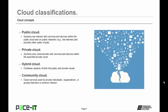There are four basic cloud classifications. There is the public cloud, where systems can interact with services and devices within the public cloud and on public networks such as the internet — Amazon's AWS is an example. Then there are private clouds, where systems only communicate with services and devices within the specified private cloud, and which are not open for the general public to purchase services. Then there are hybrid clouds, which combine aspects of both the public and private clouds. Finally, there is the community cloud classification, where cloud services are used by private individuals, organizations, or groups that have a common interest, with the community responsible for what occurs within that cloud.